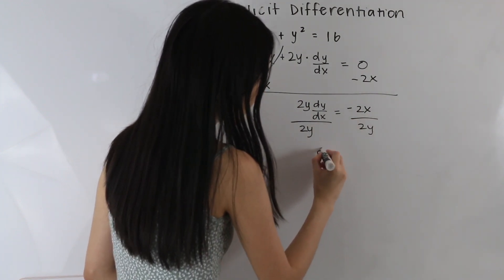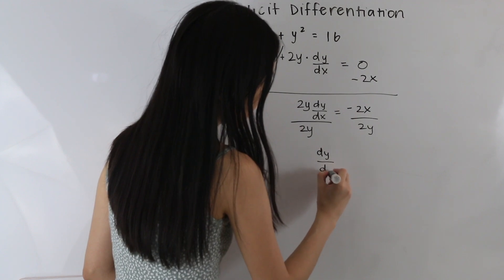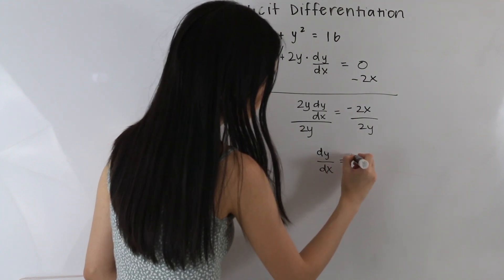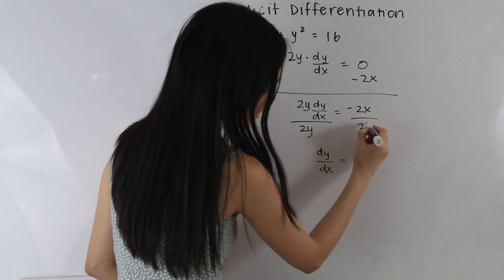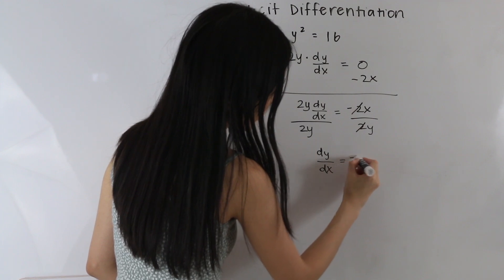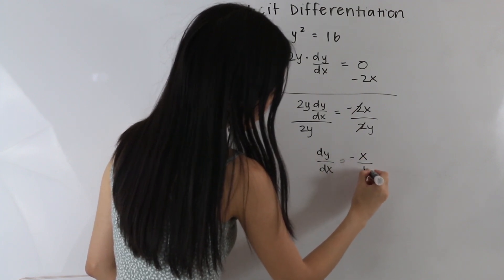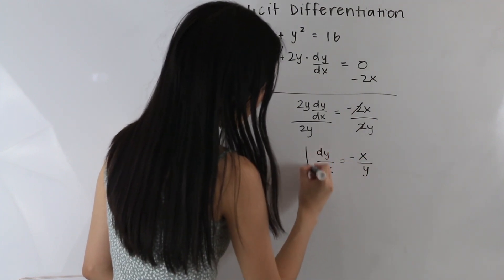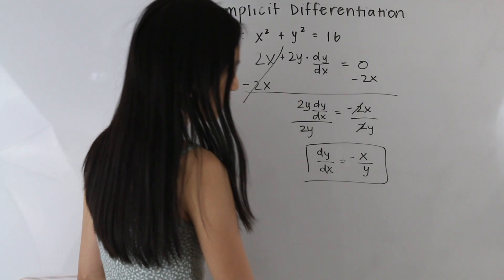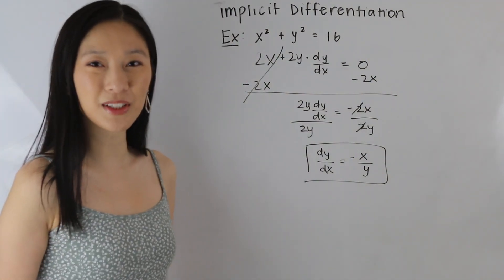So we get dy over dx is equal to — the two's cancel out — negative x over y. And that is our answer. Let's go ahead and take a look at one more example.